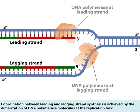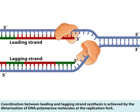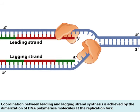Coordination between leading and lagging strand synthesis is achieved by the dimerization of DNA polymerase molecules at the replication fork.